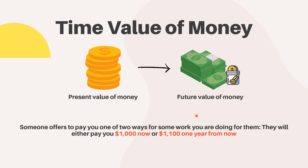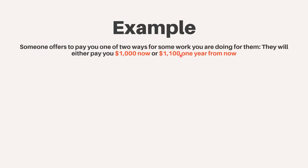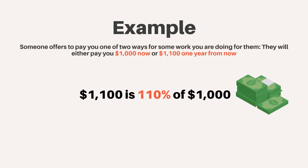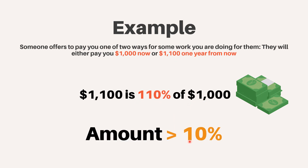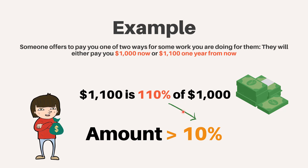Which pay option should you take? It depends on what kind of investment return you can earn on the money at the present time. Since $1,100 is 110% of $1,000, if you believe you can make more than a 10% return on the money by investing it over the next year, you should opt to take the $1,000 now. On the other hand, if you don't think you could earn more than 9% in the next year by investing the money, then you should take the future payment of $1,100.